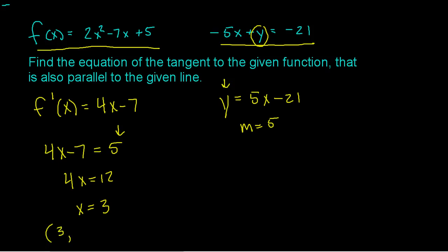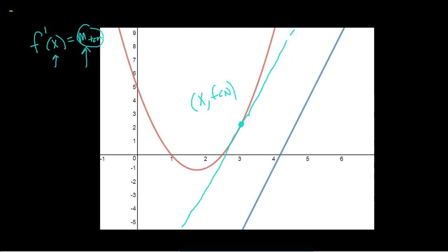Now what's the y value? Derivatives find slope; functions find y. To find the y coordinate, I'm going to plug 3 into my original function: 2 times 9, minus 21, plus 5. That's 18 minus 21 plus 5, and you get 2. So my point of tangency is (3, 2). And if we go back to that picture, I spitballed it pretty close to (3, 2). So that is the point of tangency.